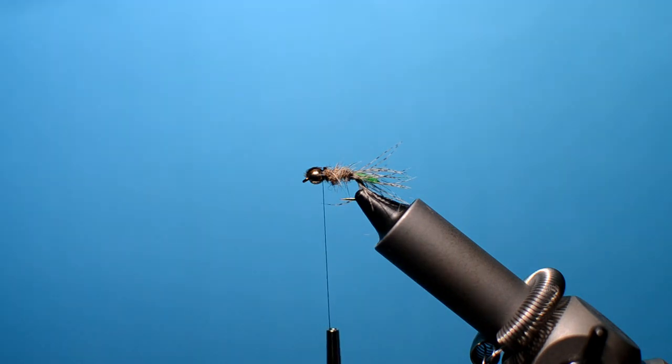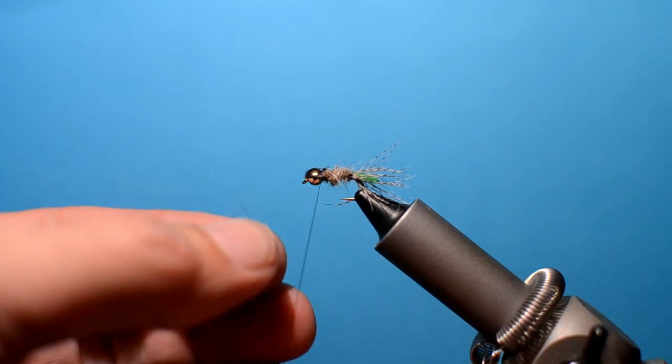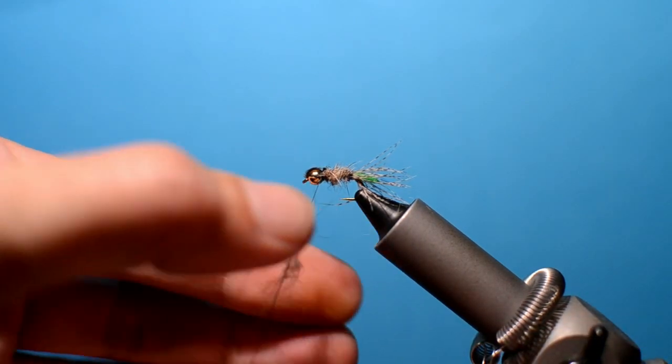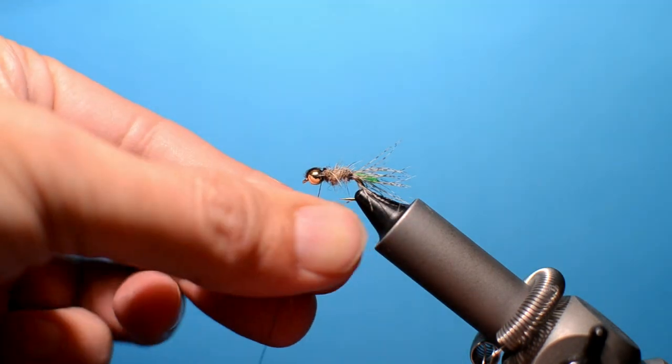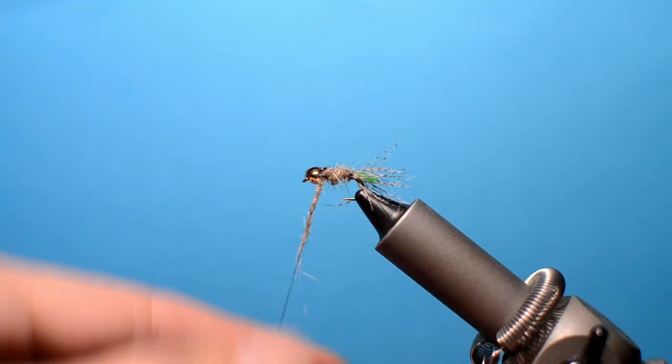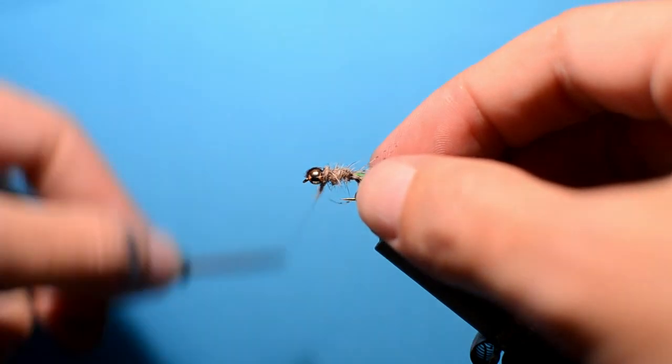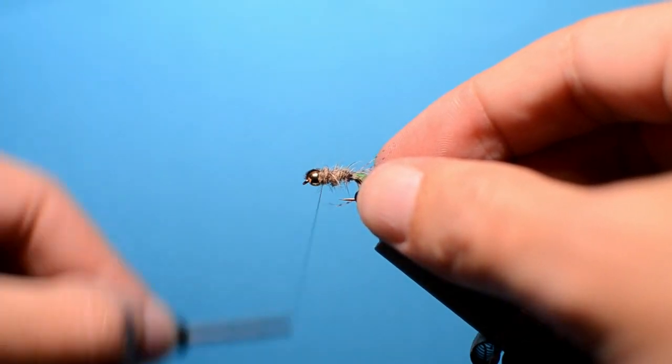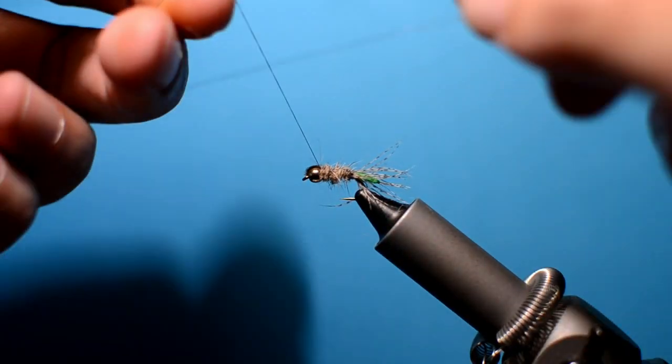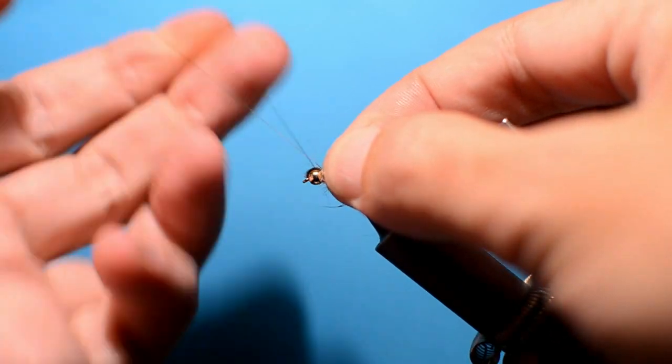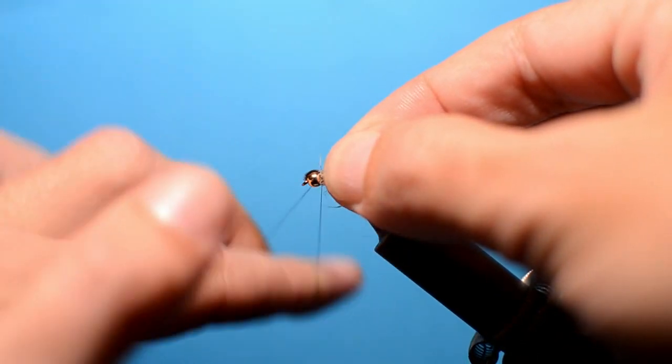Back to the hare's mask for a little bit more dubbing. Then what we want to do is just dub that on right up behind the bead there. Then it's just a case of a couple of turns of the whip finish.